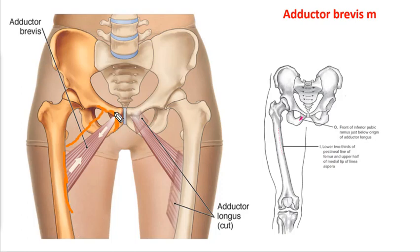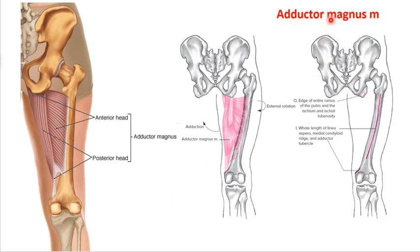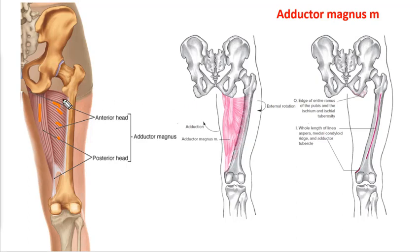The adductor magnus is the big one. It has fibers running both horizontally and vertically, giving it an anterior head and a posterior head — sometimes called the adductor head and hamstring head. Because of the vertical fiber orientation, these are actually really powerful hip extensors, just like the hamstrings. The magnus is huge — the second largest muscle of the lower extremity just behind the glute max — and is quite involved in hip extension as well as adduction.